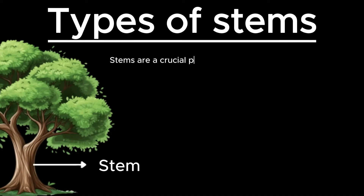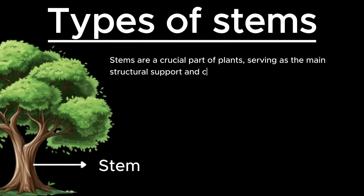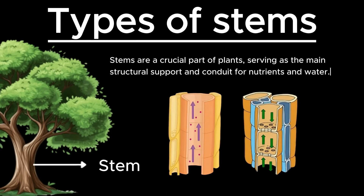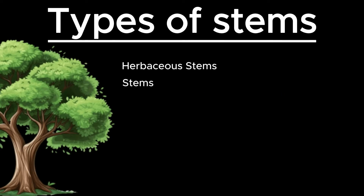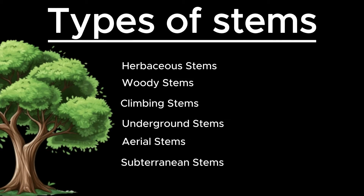Stems are a crucial part of plants, serving as the main structural support and conduit for nutrients and water. They can be classified into various types based on their structure, function, and growth habits. Here are the main types of stems — let's discuss them in detail.